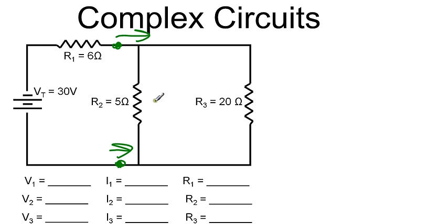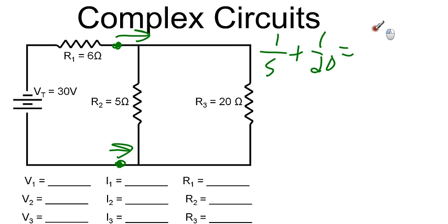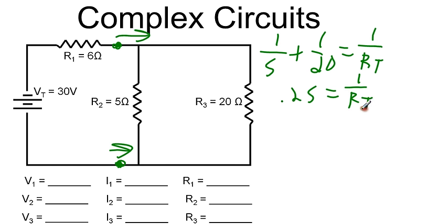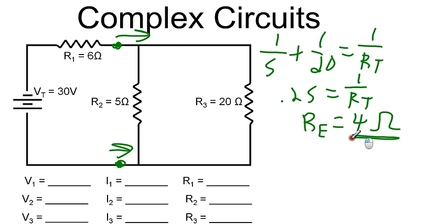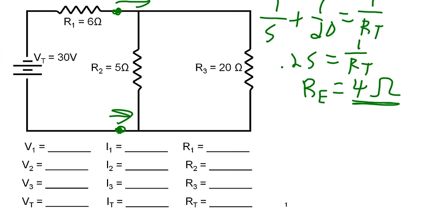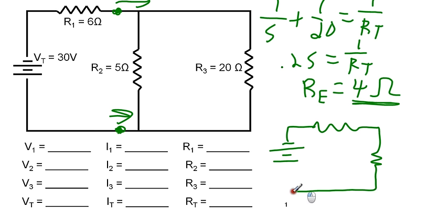If I treat R2 and R3 as only in parallel, which they are for these two terminals, then to find the equivalent resistance: 1 over 5 plus 1 over 20 equals 1 over RT. That gives us 0.25 equals 1 over RT, so the equivalent resistance RE is equal to 4 ohms. This means I can redraw these two as a single resistor with a value of 4 ohms. So I do a quick redrawing: R1 is 6 ohms and the equivalent resistance is 4 ohms.